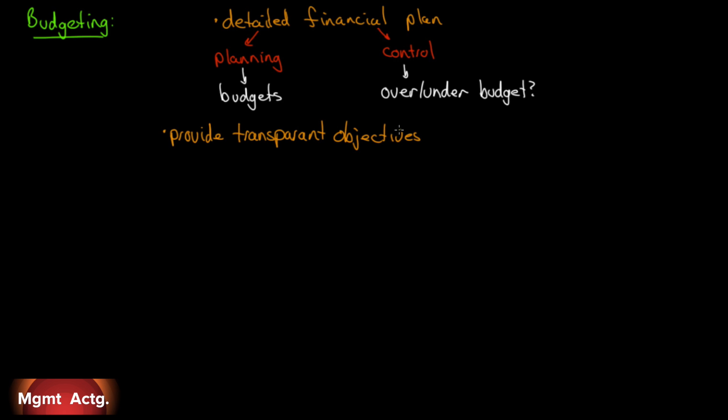Number one, it provides transparent objectives so that everybody sees the level of sales, the level of production, and the costs we have to come in at. It promotes employee understanding of the overall picture.